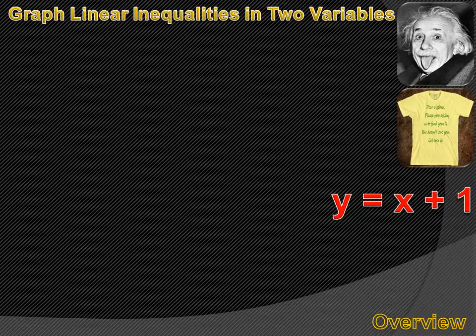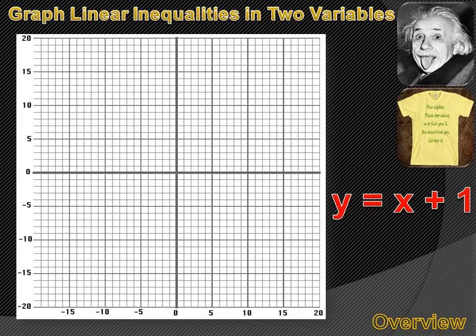For instance, y equals x plus 1. You can graph that — it's in slope-intercept form: y equals mx plus b. My slope, or m, is 1, and my y-intercept, or b, is also 1. So if I graphed that, it would look just like that. Every solution to this equation is shown on this line — the line shows the solution set, including every point on it.